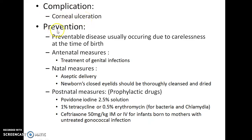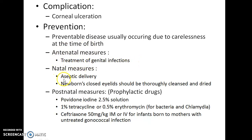How do you prevent Ophthalmia Neonatorum? It is important to remember that Ophthalmia Neonatorum is a preventable disease, usually occurring due to carelessness at the time of birth. Antenatal measures include treating genital infections of mothers. Natal measures include carrying out aseptic delivery and thoroughly cleansing and drying the newborn's closed eyelids.